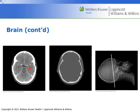Lateral ventricle. This is the temporal horn because it's in the temporal lobe. Parietal bone. These lines on either side are the cerebellar tentorium. The internal occipital protuberance.